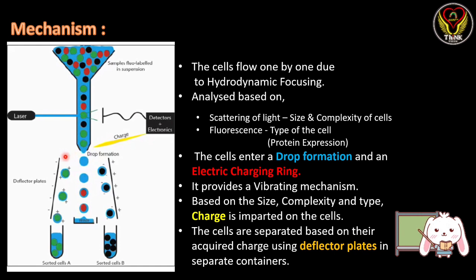After being released at the drop formation stage, there is an electric charging ring next to it. Before the drop enters the electric charging ring, the signals recorded by the detector are used to provide a specific charge to each type of cell. For example, if programmed as such, larger cells with green fluorescence are charged positively and small-sized cells emitting a different fluorescence are charged negatively. When cells are released as drops, they get charged according to the program and enter the electric charging ring.